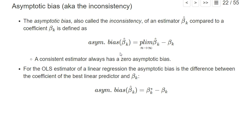If we have an inconsistent estimator, it's sometimes helpful to think about whether our estimator is likely too large or too low. One definition to specify the sign is the so-called asymptotic bias, also sometimes called the inconsistency. It's defined as the difference of the probability limit of some estimator — that's the value against which it converges — minus the true coefficient.